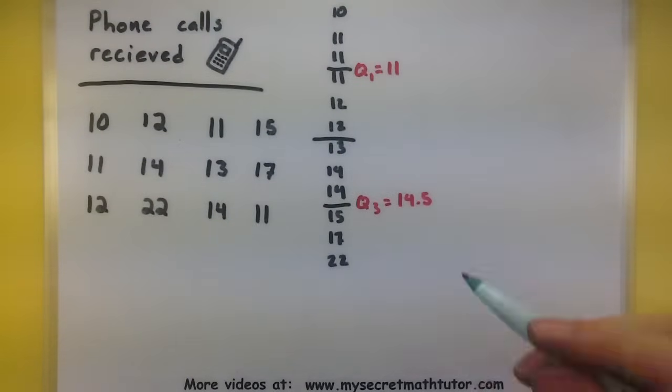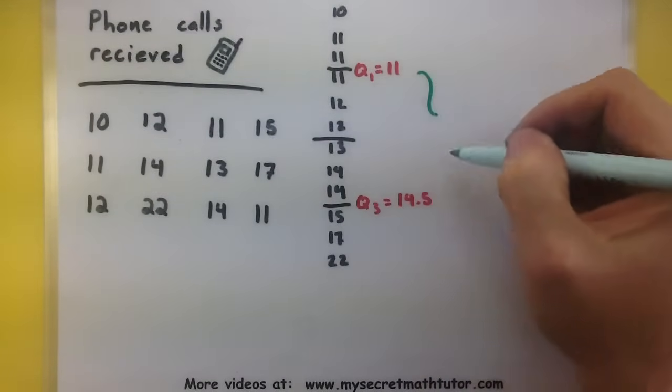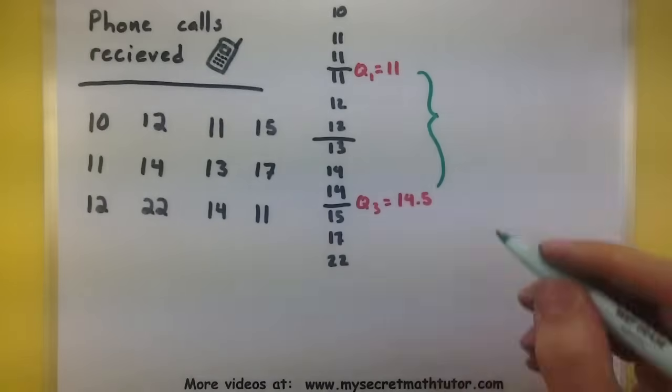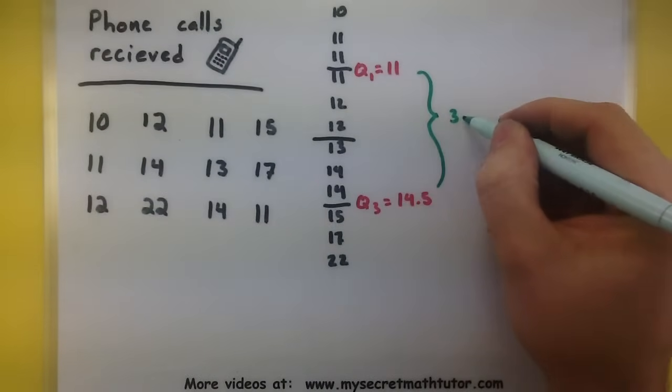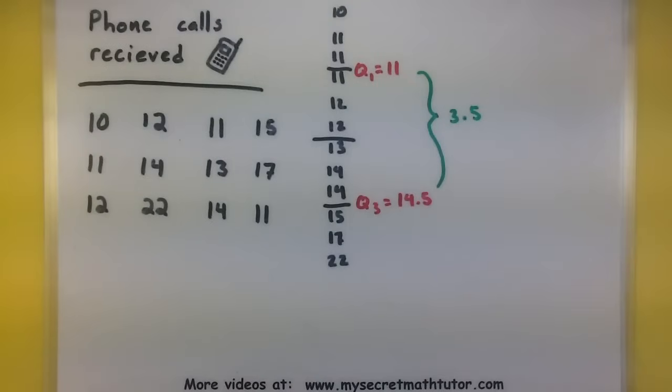Alright, now to find our interquartile range, we would end up subtracting these two values from one another. This would give us 3.5. Alright, we have all of the information we need. Now we can figure out other values so we can figure out outliers.